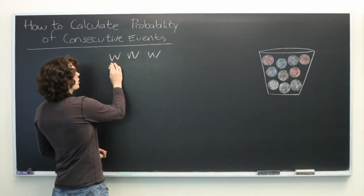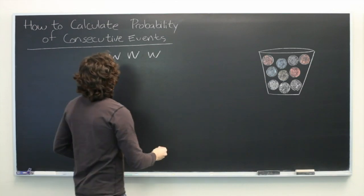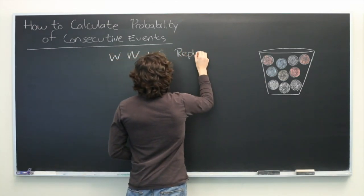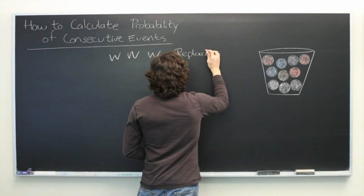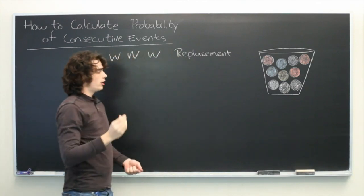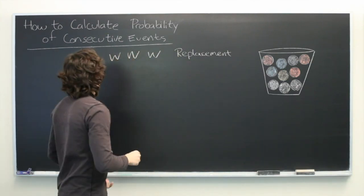The sequence we want is white, white, white, and we're going to say for this one that there is replacement. In other words, after we draw out a ball, we make a note of what color we've picked, and we place it back in our bucket.